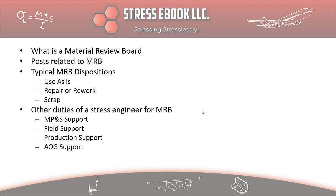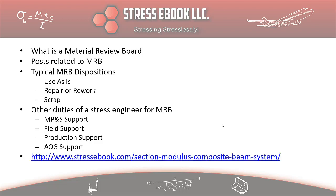Then we will look at the other duties of a stress engineer as a support person for the MRB activities, and those would include MP&S support, field support, production support, AOG support. The other kinds of support activities that I probably didn't include in this slide would be what's called SRMRB, meaning that you have an issue with a product or a part that is received from a supplier, for example.